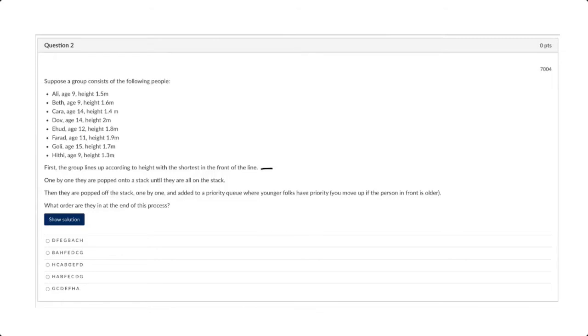So I scan over this list and I see that the shortest is Hithy, and then Chara at 1.4, and then Ali at 1.5, and I've got Beth at 1.6, and Ghali at 1.7, Ehud at 1.8, and Farad at 1.9, and finally at the top we've got Dov.